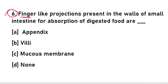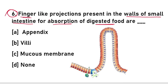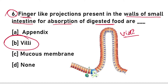Sixth question: finger-like projections present in the walls of the small intestine for absorption of digested food are called villi. Villi is the correct answer — villi absorbs the digested food.